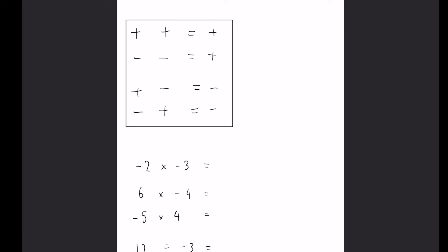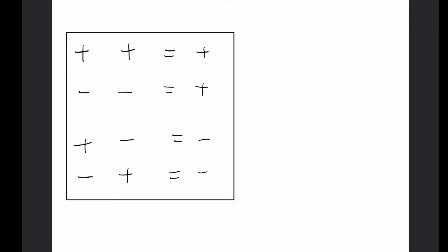So multiplication and division, these rules can be applied in a very simple way. So for example when we have two pluses or two positive numbers then we can determine the outcome and it's going to be a positive number.